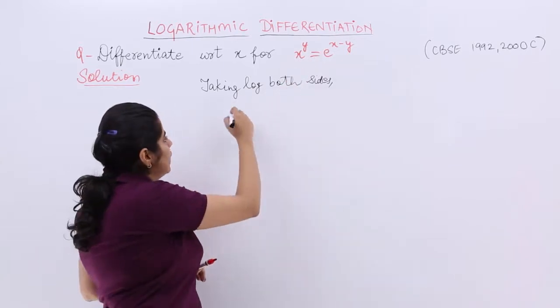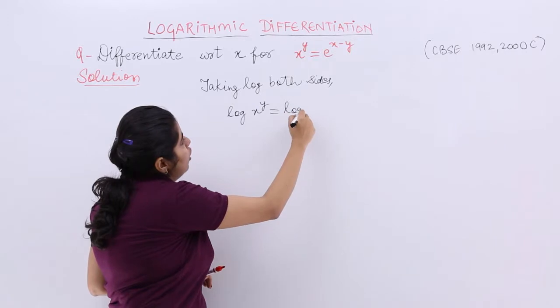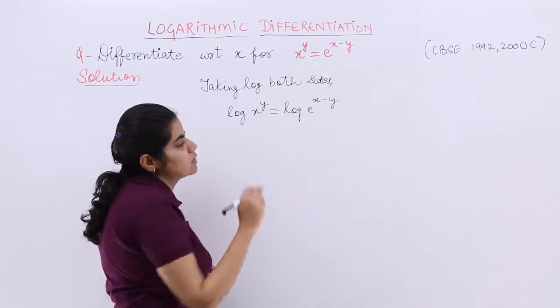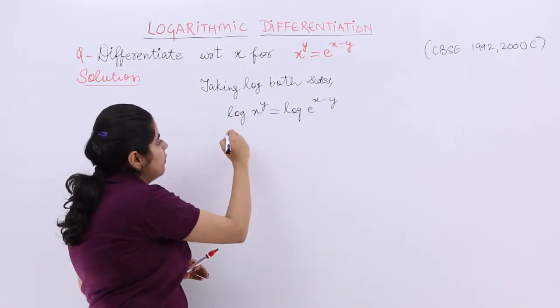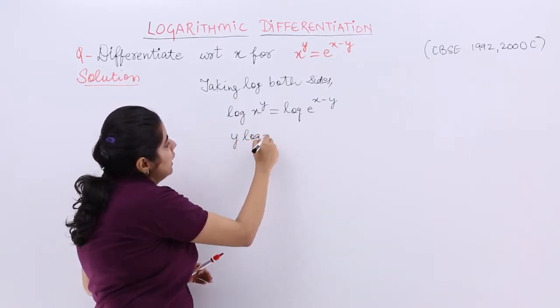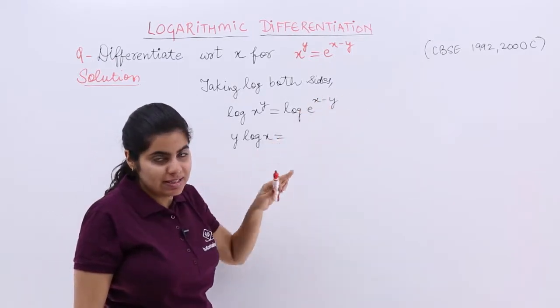What happens? Here it becomes log x raised to the power y. Here it becomes log e raised to the power x minus y. When we have log x raised to the power y, it means log m raised to the power n. Power comes straight forward outside.